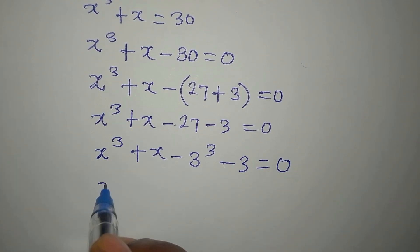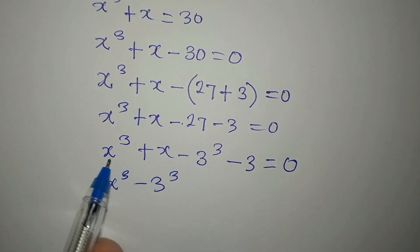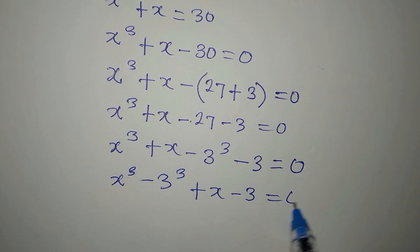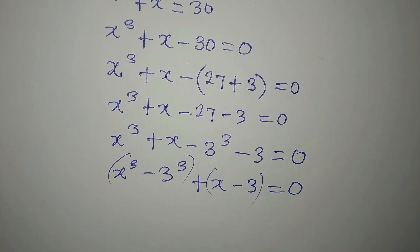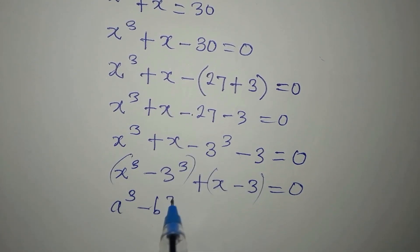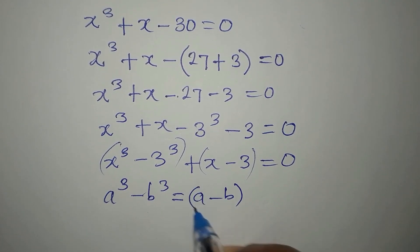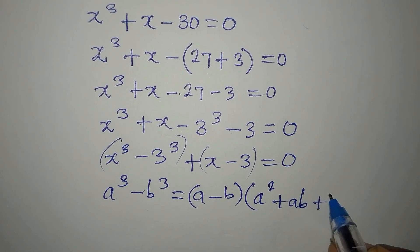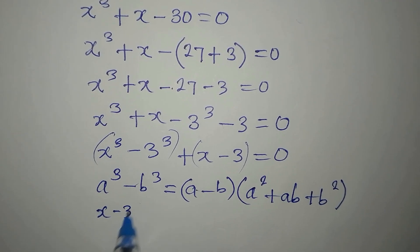Now I have x³ - 3³, and I'm going to combine these two, then combine x - 3. Everything equals 0. For a³ - b³, we apply the difference of cubes formula: (a - b)(a² + ab + b²). This gives us the factor (x - 3).